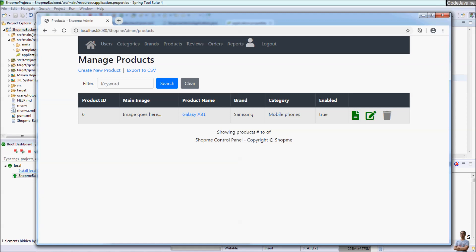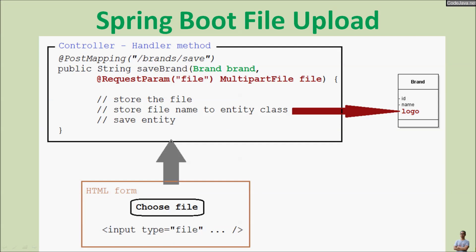This picture helps you understand how to code the file upload function for a Spring Boot project. In the view layer in the HTML form, we need to use the HTML tag input type equals file to allow the user to choose the file to be uploaded to the server. When the form is submitted, the handler method in the controller class reads the uploaded file using the request parameter annotation and MultipartFile, provided by Spring.